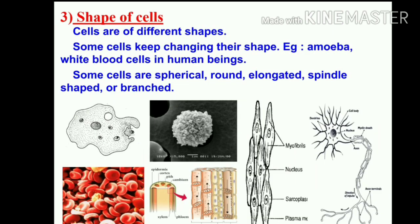Now we will see the shape of cells. There are different shapes of cells. Some cells keep changing their shape, like amoeba or white blood cells in human beings. Amoeba keeps changing its shape by projections of varying length producing out of its body, called pseudopodia — 'pseudo' means false and 'podia' means feet. These projections appear and disappear as amoeba moves or feeds.